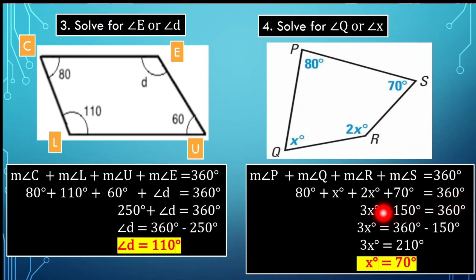We're looking for the value of X. Transferring 150 to the other side: 360 minus 150 equals 210. So 3X equals 210. To find X, we divide both sides by 3 — the numerical coefficient of X. So 3X divided by 3 gives X, and 210 divided by 3 gives 70 degrees. Therefore, X equals 70 degrees.